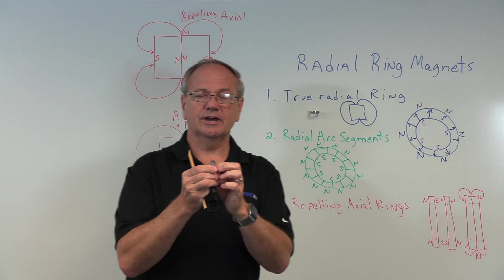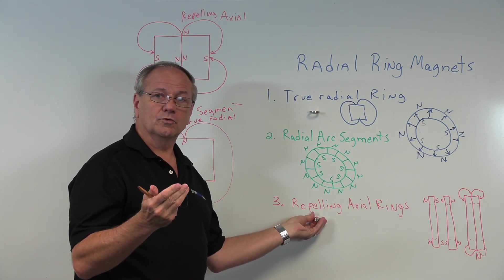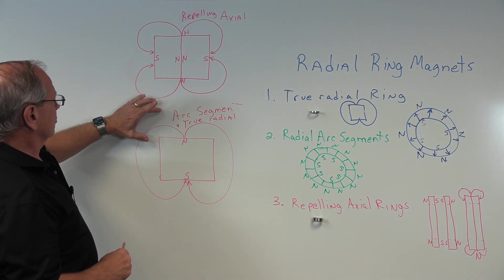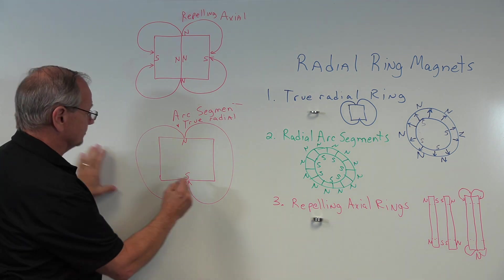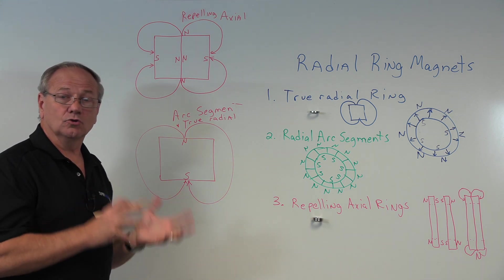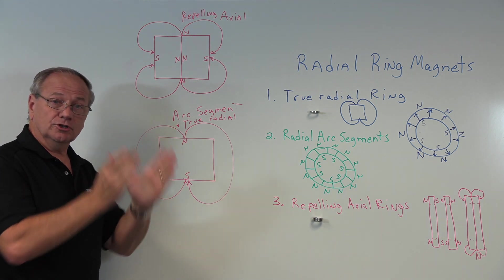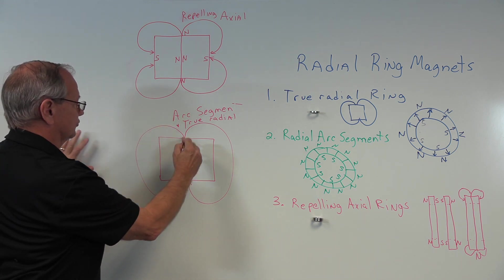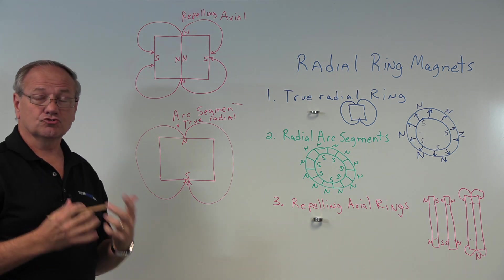So what we want to do is take a look at the difference between these magnetically. What really makes these different? We'll start with the arc segments and the true radials. They are true radials because the inside circumference has a south pole or a north pole, and you have the opposite pole on the outer circumference. If you look at the flat faces, you get this profile. This is the magnetic profile. If you see the flux come out here and loop around, that is a true radial.